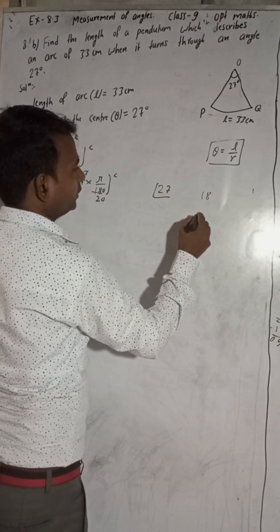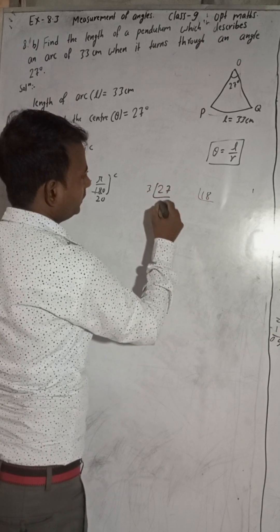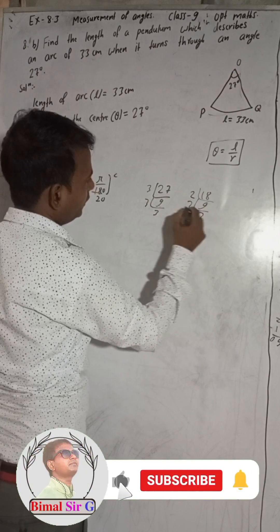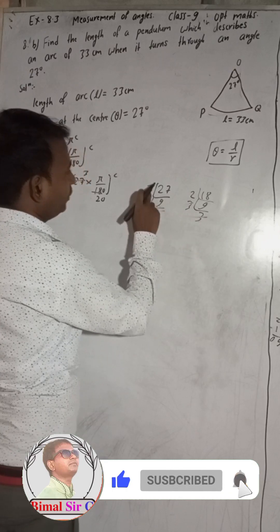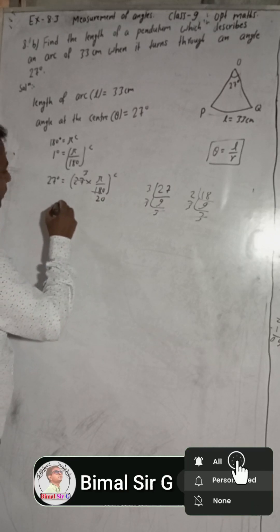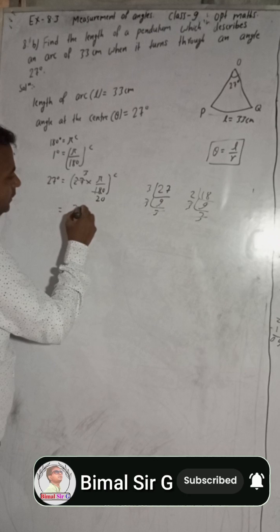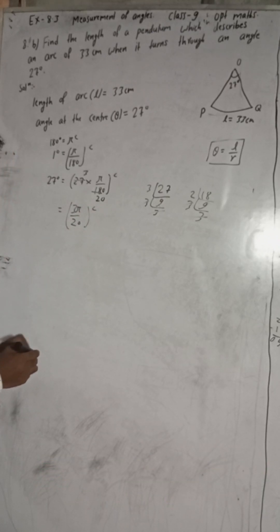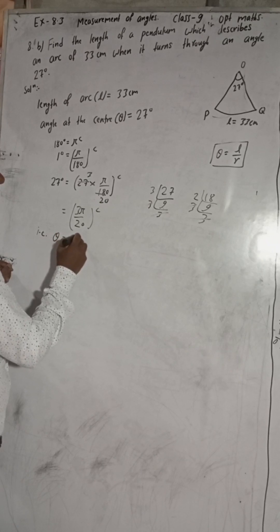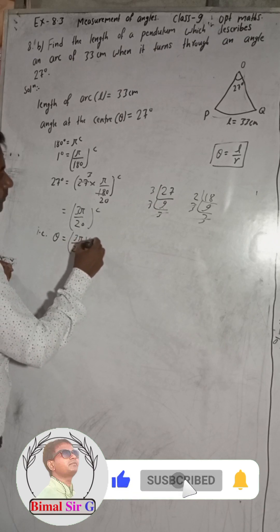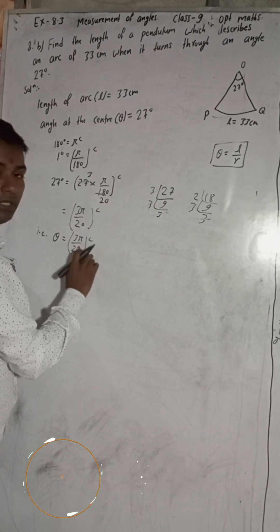You can find LCM. So this is 3, 9, 3, 3. 2, 9, 3, 3. So this 3, this 3 cancel, 3, 3 cancel. So here in 27, 3 and in 18, there is 2 and this 3. So we got 27 degrees is equal to 3 pi by 20 radian. That is, theta is equal to 3 pi by 20 radian. This is now our theta.